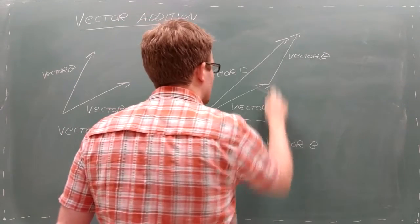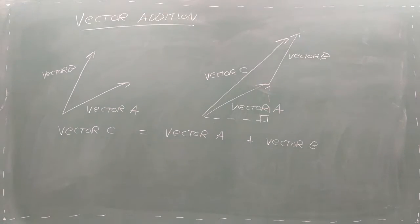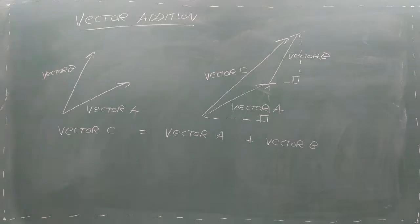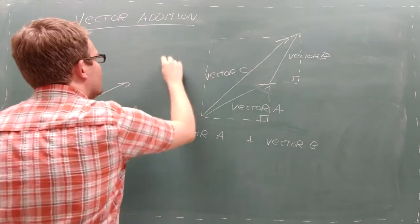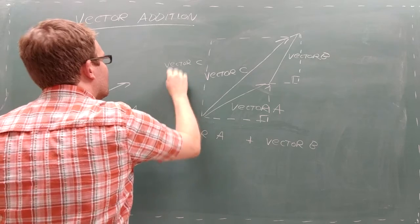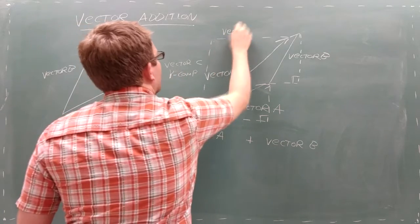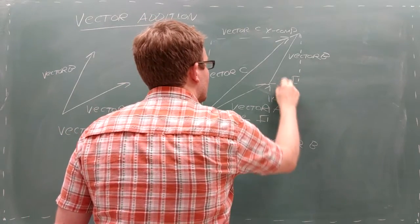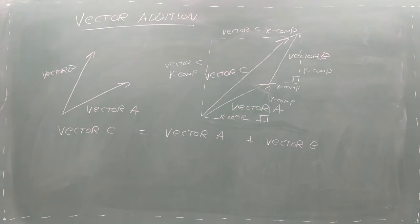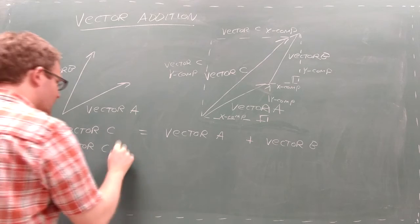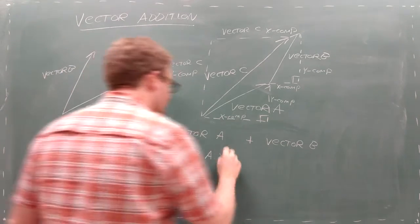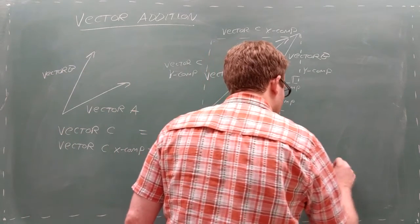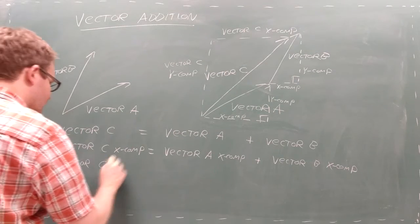To think of this process mathematically, you can draw vector A and vector B as right triangles. Remember, to draw a vector as a right triangle, you make the magnitude the hypotenuse, and the x and y components the legs of the right triangle. With these components in our drawing, we can see that the x components will combine to form the x component of vector C, and the y components will combine to form the y component of vector C.